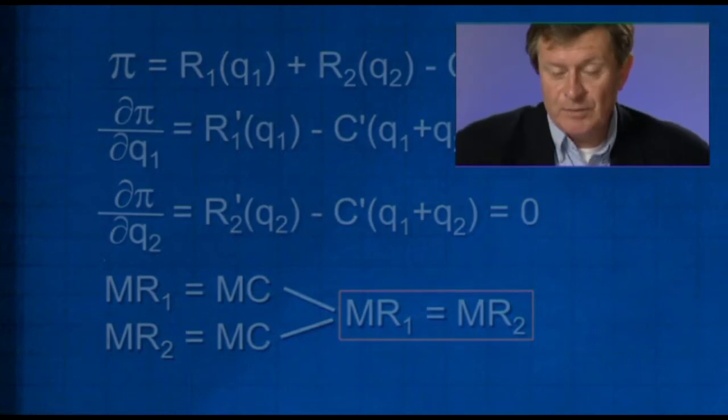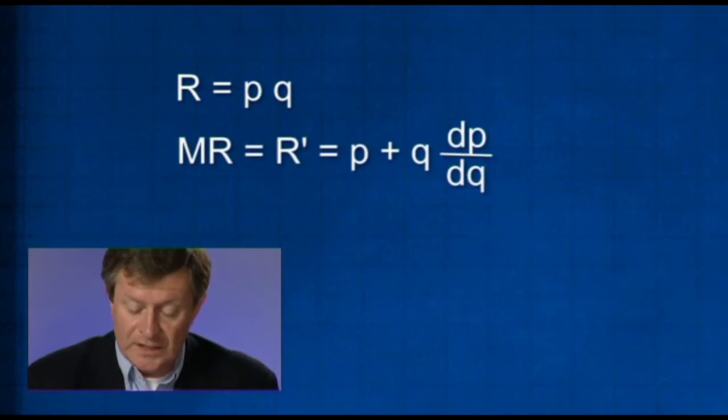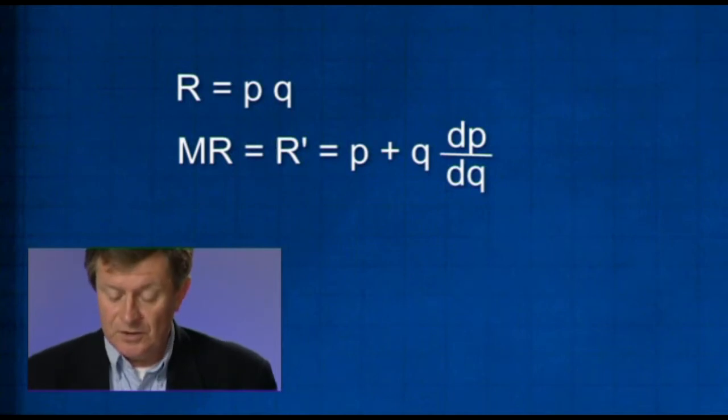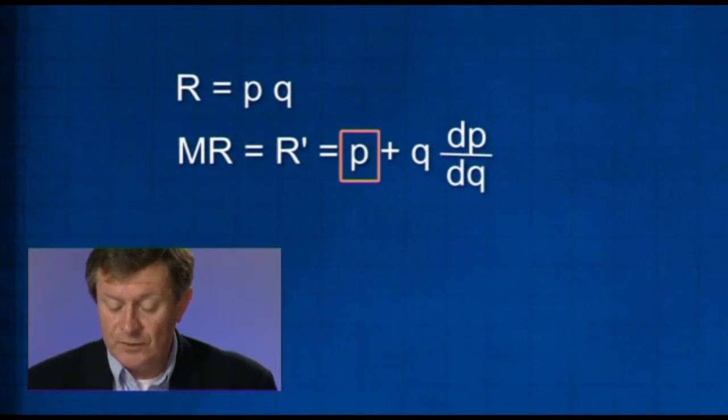Now we want to make use of another result, which is that the marginal revenue can be expressed in terms of the price and the elasticity in a market. If we start with any market just for the moment, revenue is price times quantity. Marginal revenue, which is R prime, will be the derivative of this total revenue.